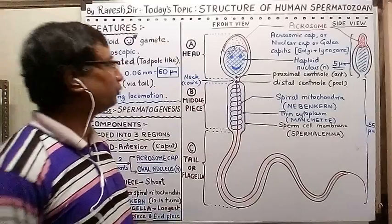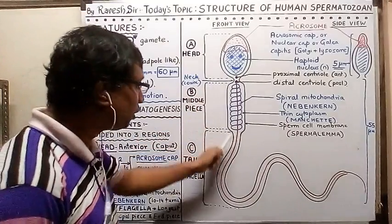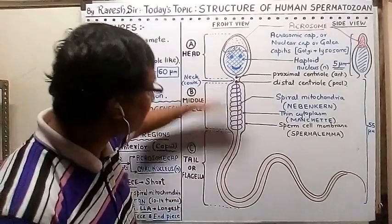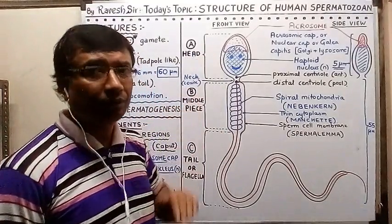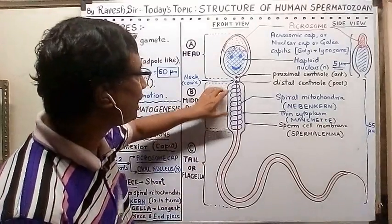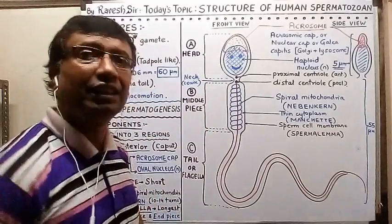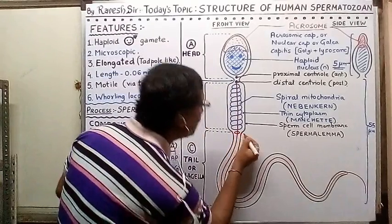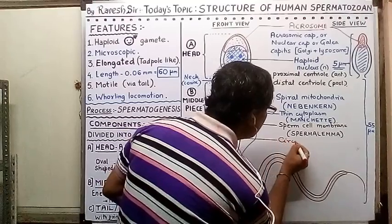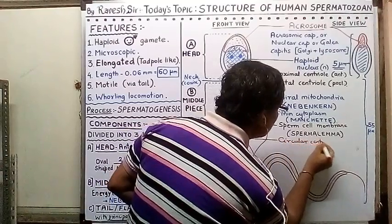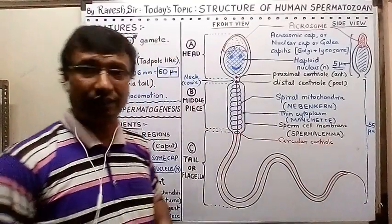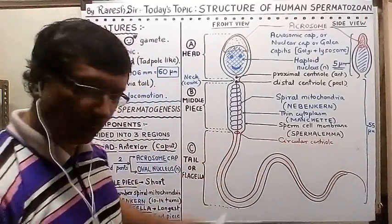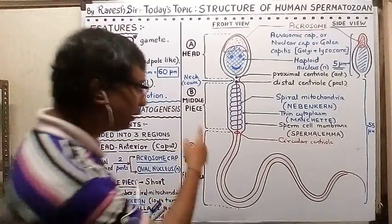The middle piece continues into the narrowest part — the tail — which enables sperm movement. At the junction of the middle piece and tail there is a circular structure called the centriole ring. Its exact function is not fully explained, but it is assumed to help in the whirling action of the flagella.